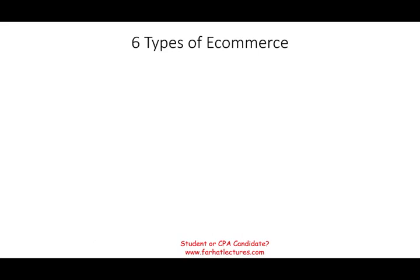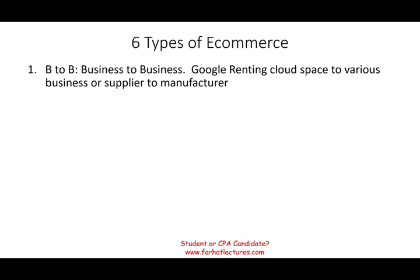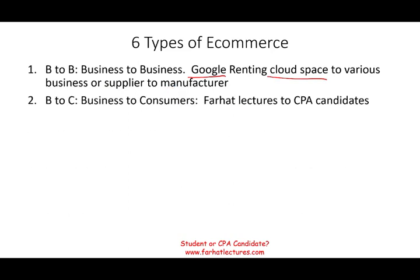E-commerce can be broken down into six types. The first is business to business, B2B — where one company does business with another. For example, Google rents cloud space to various businesses. The second is business to consumer, B2C — when a business sells to consumers. For example, Farhat Lectures sells services to CPA candidates. Business to consumer is the largest type — think of Amazon.